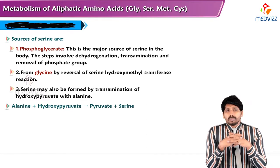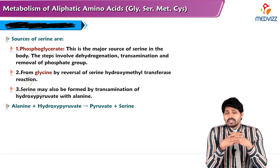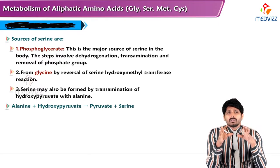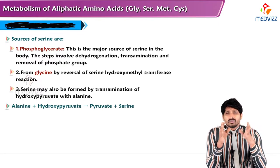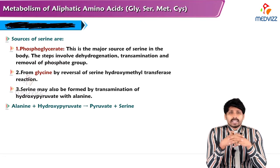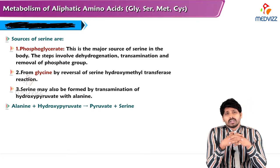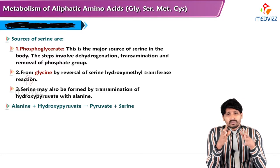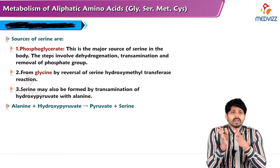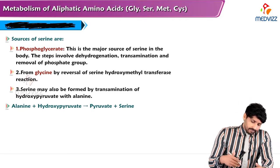In our previous videos we discussed glycine, where serine is useful in making glycine. The reaction — serine to glycine — is catalyzed by serine hydroxymethyltransferase, with involvement of folic acid: THF (tetrahydrofolate) is converted into N5,N10-methylene tetrahydrofolate. This is a reversible reaction, so glycine can also form serine.